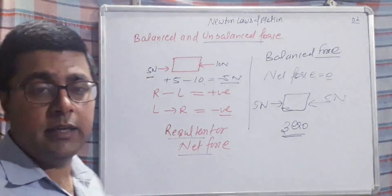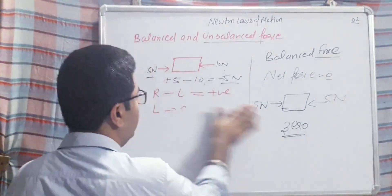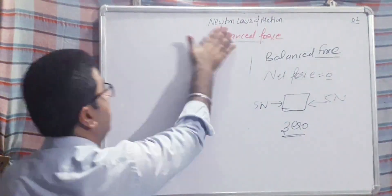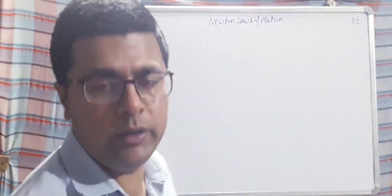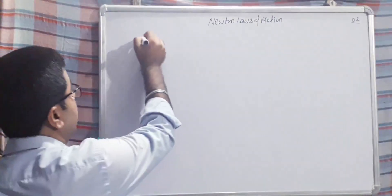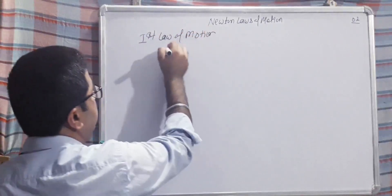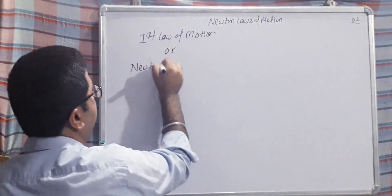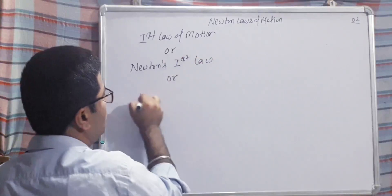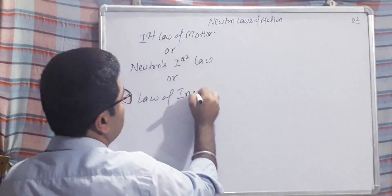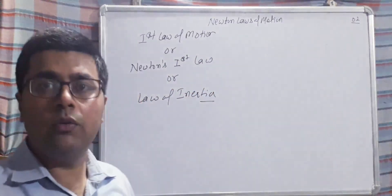Now let's move to the next topic: Newton's Laws of Motion. Newton is the name of the scientist who gave three laws, and these are named after him — Newton's Laws of Motion. Today I will discuss the first law of motion, also known as the Law of Inertia.